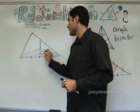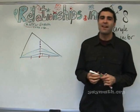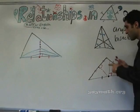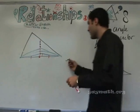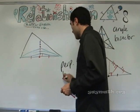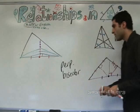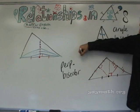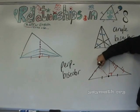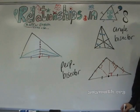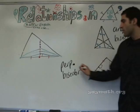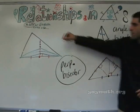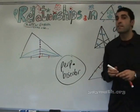Equidistant. That's all I want to go over. The perpendicular part is that the line is perpendicular to this side, and it bisects this line. It's the only one of the four that doesn't necessarily need to touch a vertex. The other three do.